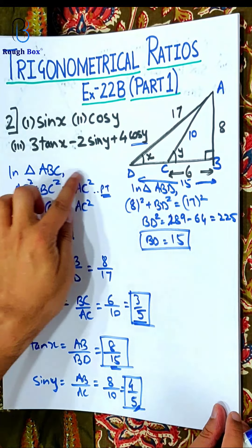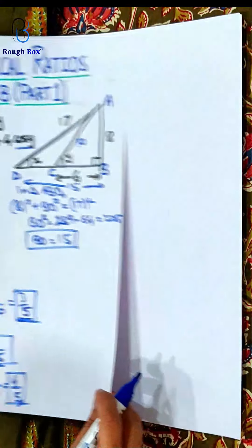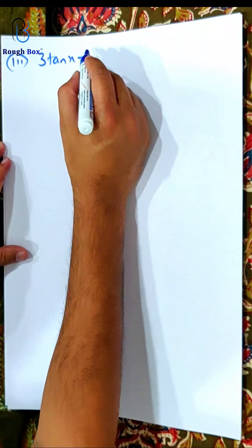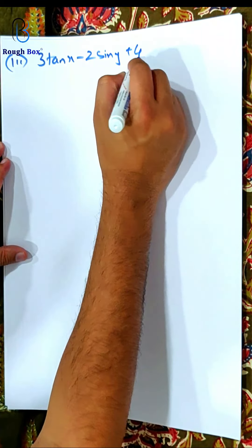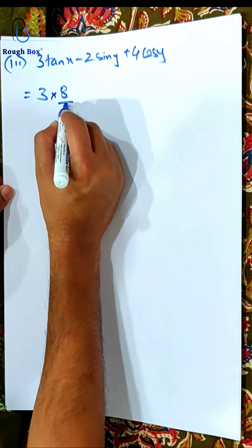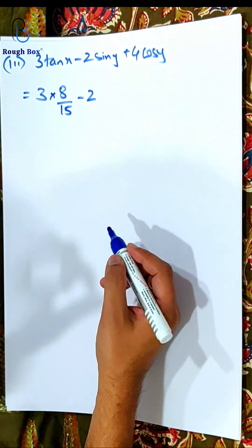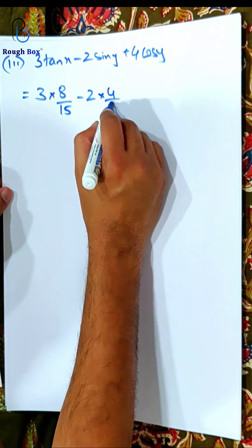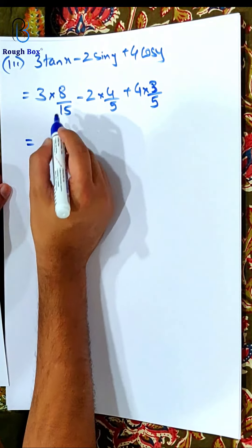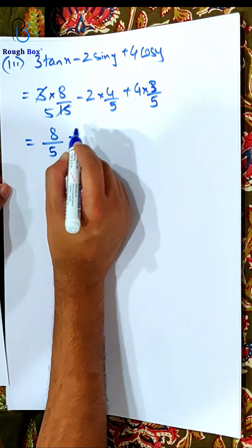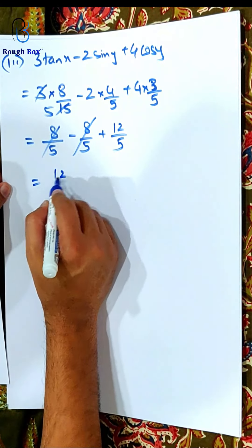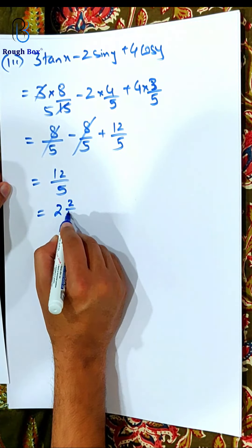Now I know tan x, sin y, and cos y. So we shall use all these three and try to find this entire expression in the third part. So the third part says: 3 tan x minus 2 sin y plus 4 cos y. So 3 tan x — tan is 8 by 15 — so 3 into 8 by 15. Sin y is 4 by 5. And cos y is 3 by 5. So I get 8 by 5, 8 by 5, and 12 by 5. So it cancels, and I get 12 by 5, which is 2 and 2 by 5.